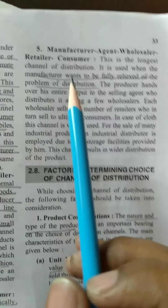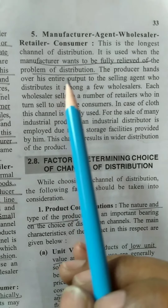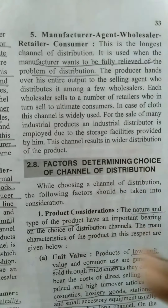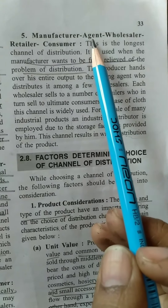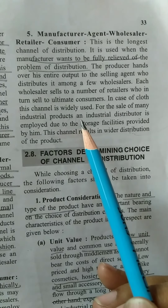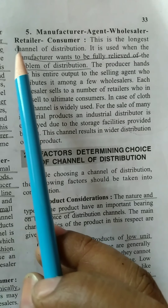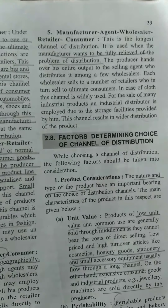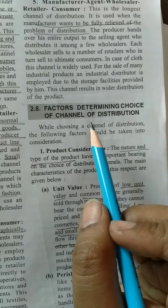The fifth and longest channel — manufacturer to agent to wholesaler to retailer to consumer — is used when the manufacturer wants to be relieved of distribution responsibilities and focus purely on production. The manufacturer passes responsibility to the agent, who then sells to the wholesaler, who sells to multiple retailers, who finally sell to consumers. This concludes our discussion of the various channels of distribution. In the next video we will discuss the factors determining the choice of channel of distribution.